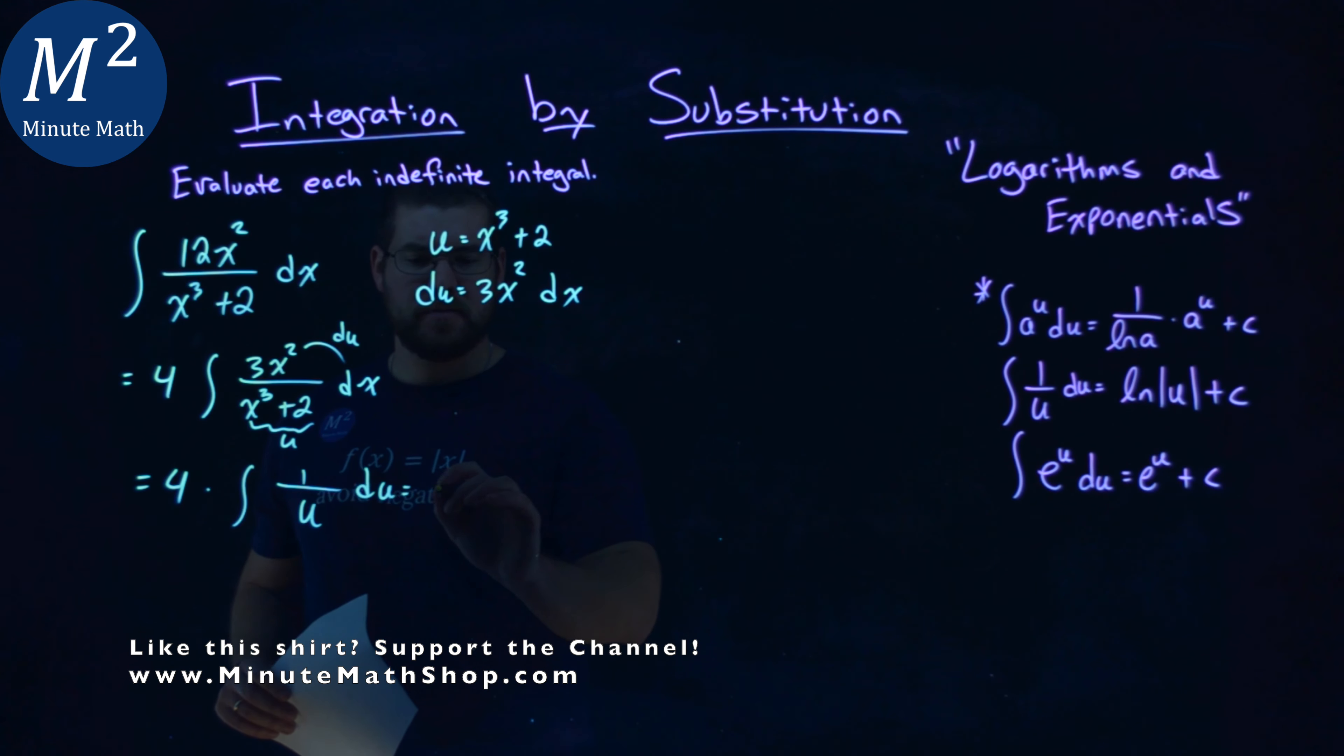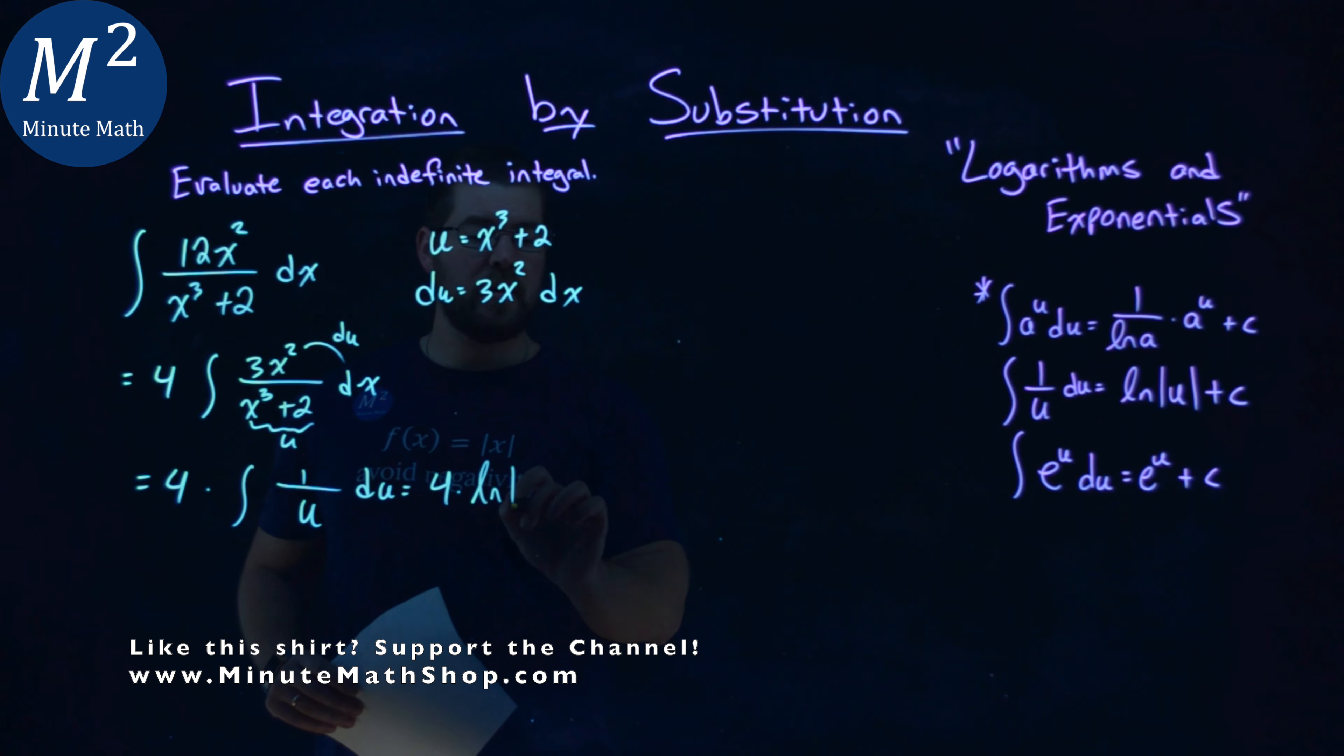We have to use our definitions. So 4 stays there, but the integral of 1 over u du is just the natural log of the absolute value of u, then plus c.